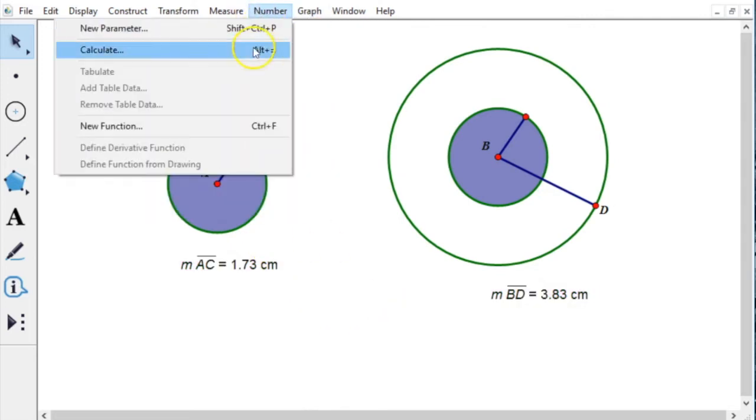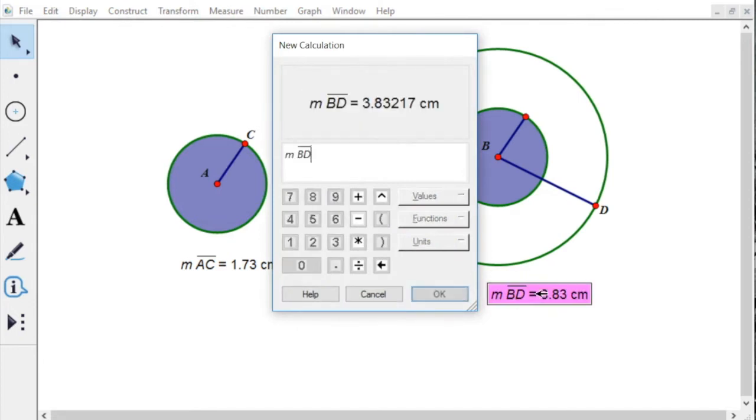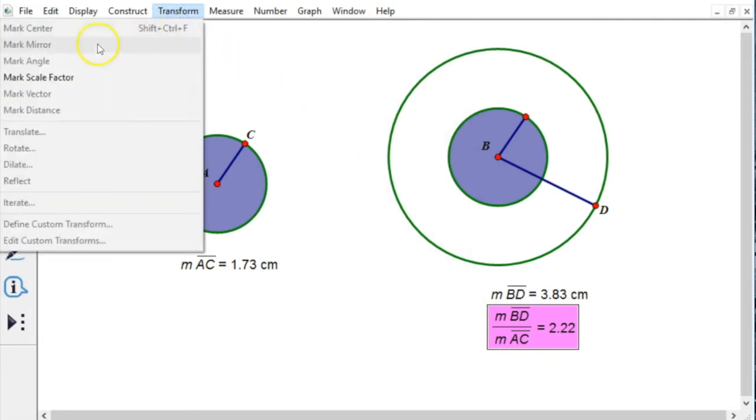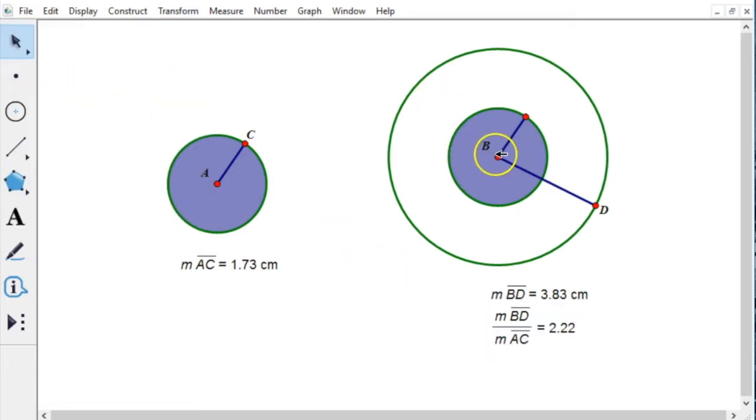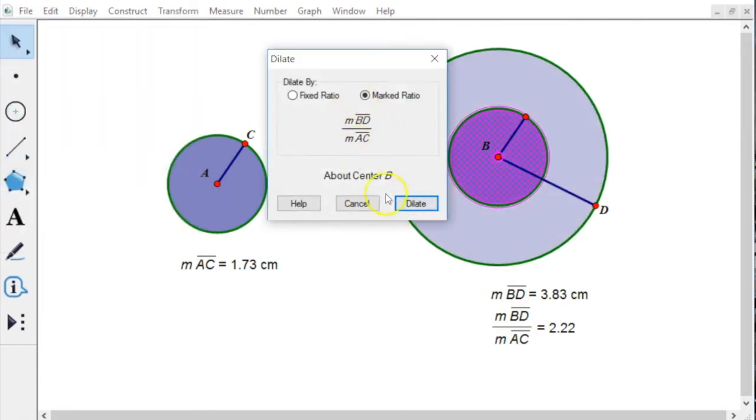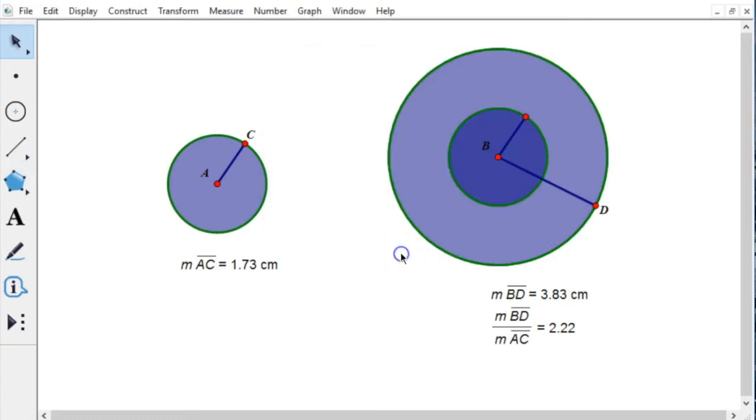So what this program does is we calculate that ratio. So we take what I want to become, my image, and I'm going to divide it by my pre-image. And it creates that value. And what I'm going to do is I mark that as my scale factor, which is perfect. So in this program, I say I need to dilate it by this center, B, and I'm going to dilate that circle. And actually, I don't need to do the line or that point. I'm going to dilate this circle by that scale factor. And you watch what happens. I'm going to dilate it by that scale factor. And bam, it lands right on the nose.